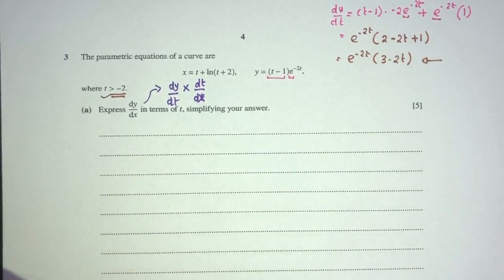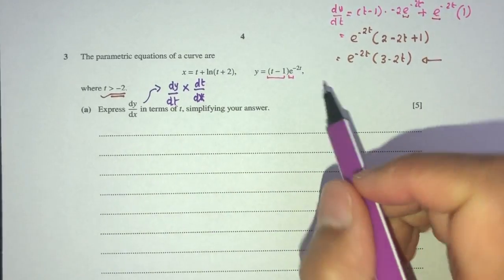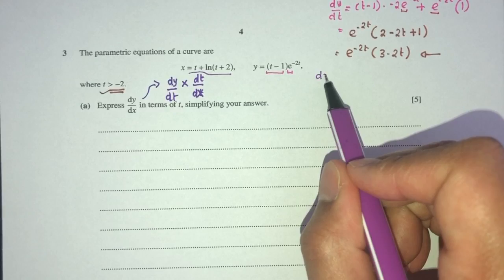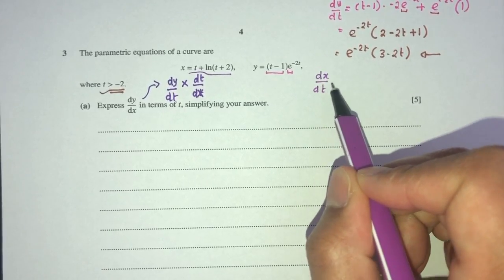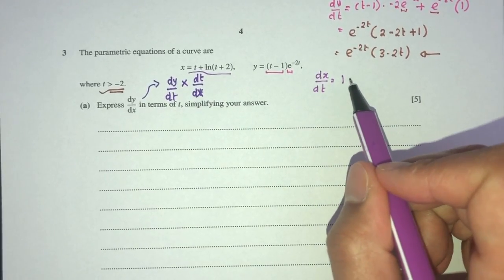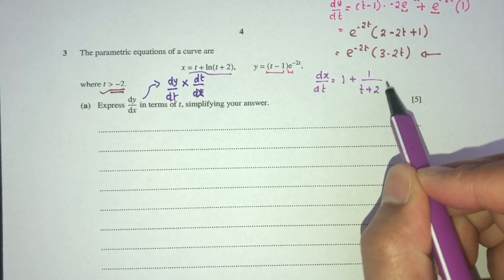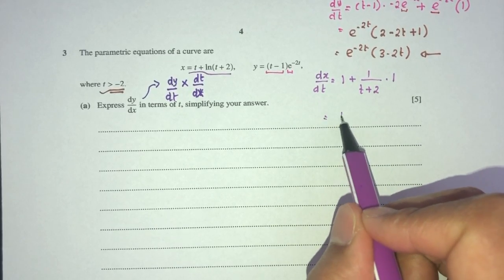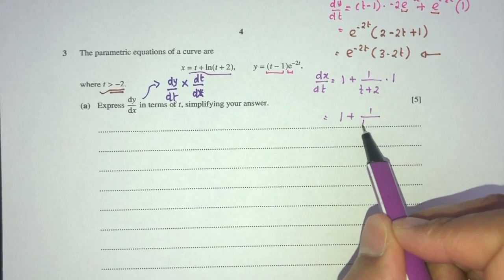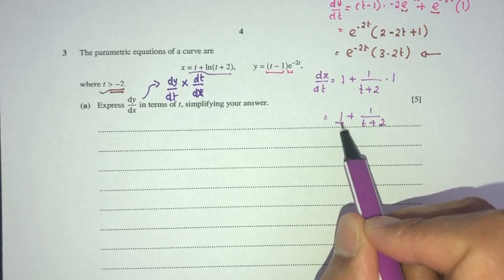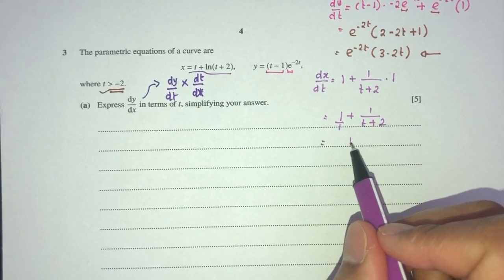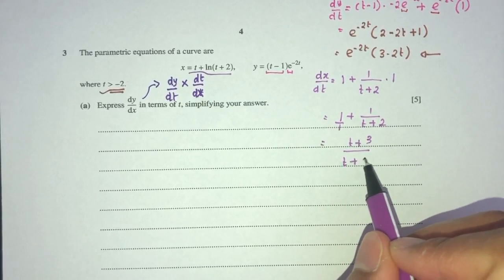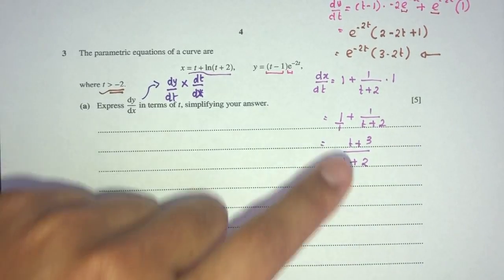Now we find dx/dt. Differentiating x with respect to t gives: 1 + 1/t + 2 · (1) = 1 + 1/t + 2. Simplifying by making a common denominator of t: (t + 2 + 1) / ... that becomes (t + 3)/(t + 2) for dx/dt... wait — simplifying to (t + 3)/(t + 2).